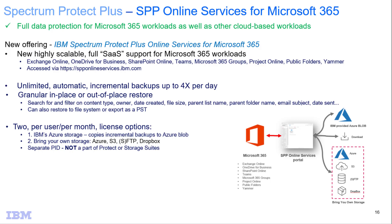Welcome to this demo of IBM Spectrum Protect Plus Online Services for Microsoft 365. This is a new offering in our Spectrum Protect portfolio, and it provides data protection for Microsoft workloads, including Exchange Online, OneDrive for Business, SharePoint Online, Teams, Microsoft 365 Groups, Project Online, Public Folders, and Yammer.